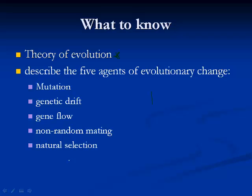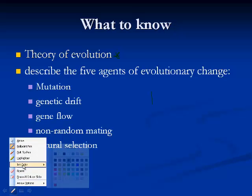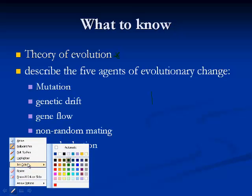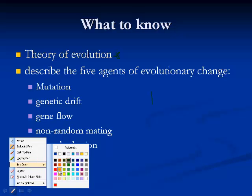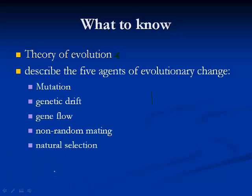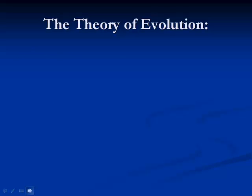So first of all, we're going to talk about the theory of evolution — what is it? And then we're going to talk about the different agents of evolutionary change, so pretty much what actually causes evolution to occur: mutations, genetic drift, gene flow, non-random mating, and natural selection. I'm going to talk about the definitions of each one first, and then we'll go over some activities to help concrete our understanding next class.